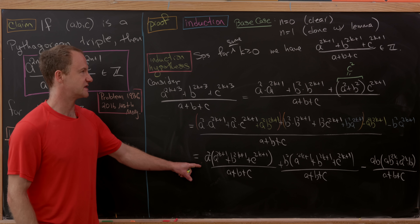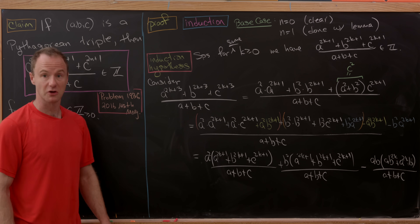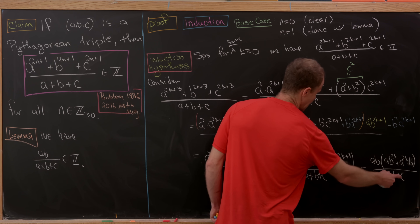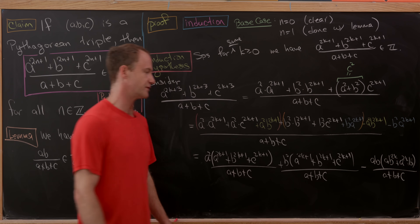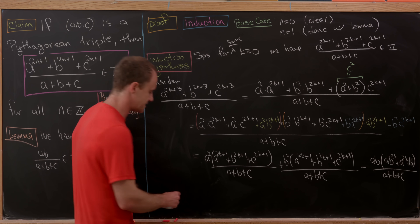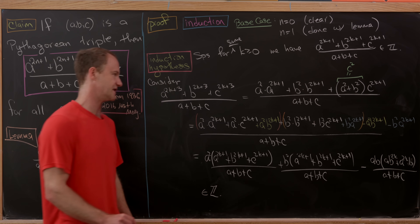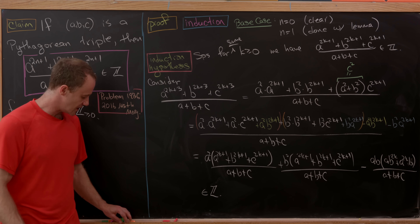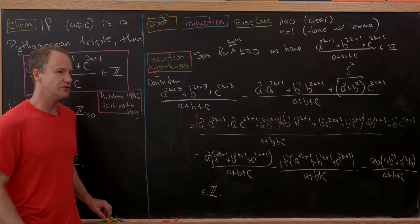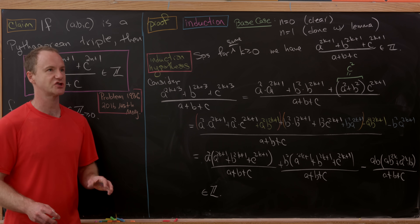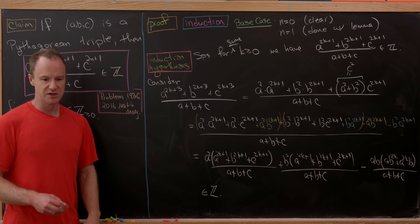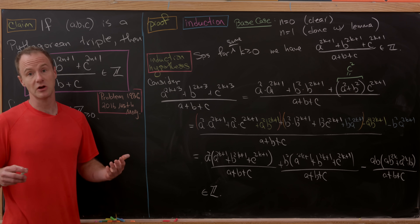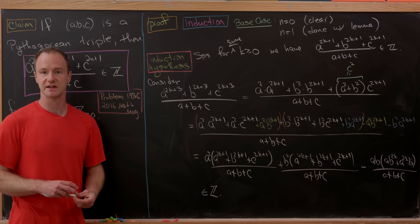By our induction hypothesis, the first term is an integer. The second term is also an integer by the induction hypothesis. And by our lemma, a times b over (a + b + c) is also an integer. Putting that all together, we have an integer, and that finishes the proof by induction. There might be another way to do this using the well-known parametrization of Pythagorean triples — if you find a solution that way, post it in the comments.